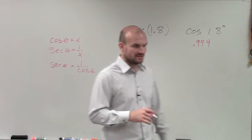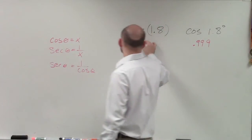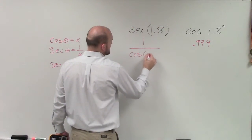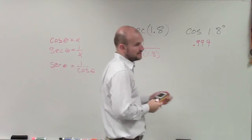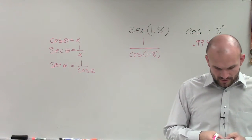They are reciprocals of each other. So therefore, if I want to plug this into my calculator, I'm going to plug it into my calculator as 1 over the cosine of 1.8. So to calculate this, I do 1 divided by cosine of 1.8.